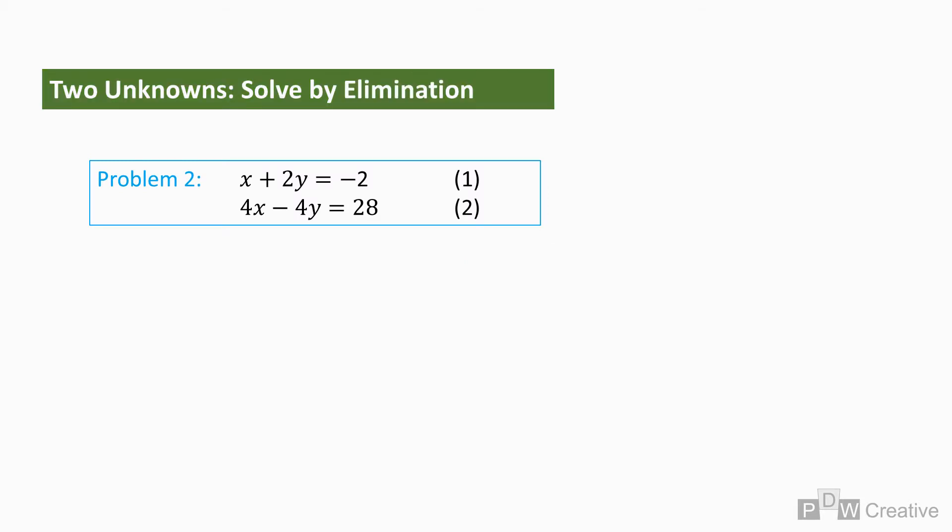We can also solve problem two using the elimination method. So here we start with the same two equations. We need to select a variable to eliminate, and I'm going to pick x from equation one for this problem. So we need to create two identical variables across the two equations. And at the moment, none match, so equation one will need to be modified.